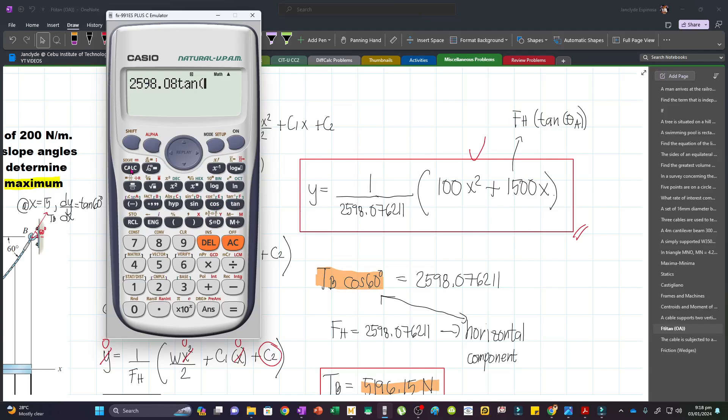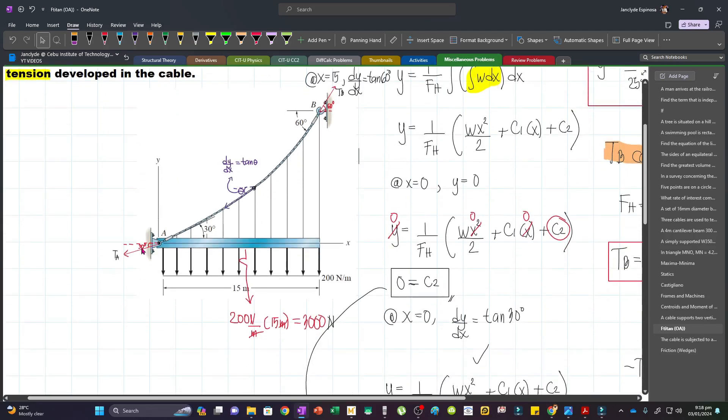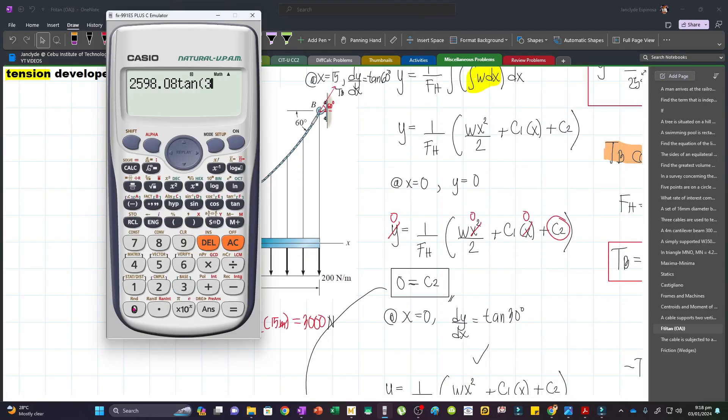So times tangent, and then our angle at A is 30 degrees. So we will type 30. And so this is how you can get 1500, just by the answers that you obtained from the calculator.